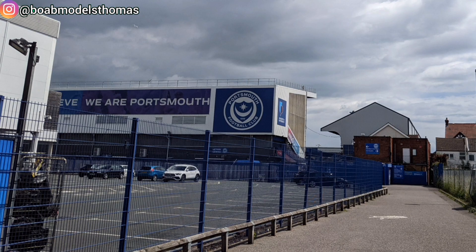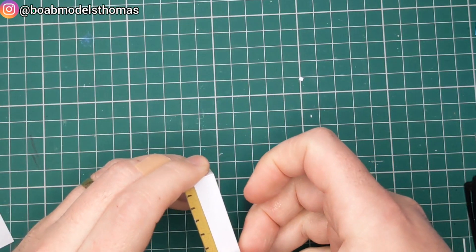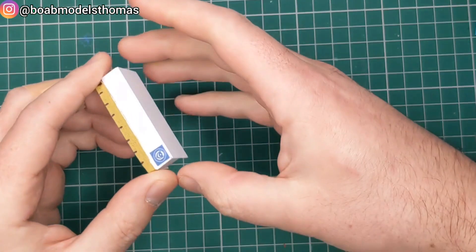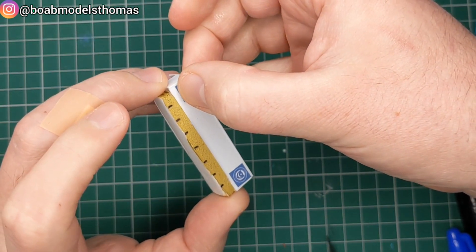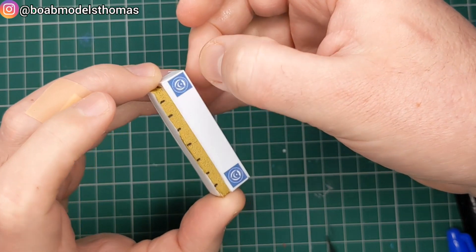I printed off my own logos to go on the back of the stands, as you can see here. I could have used water slide decals, but as I wasn't going to be clear coating this, I felt that using paper and PVA was fine.